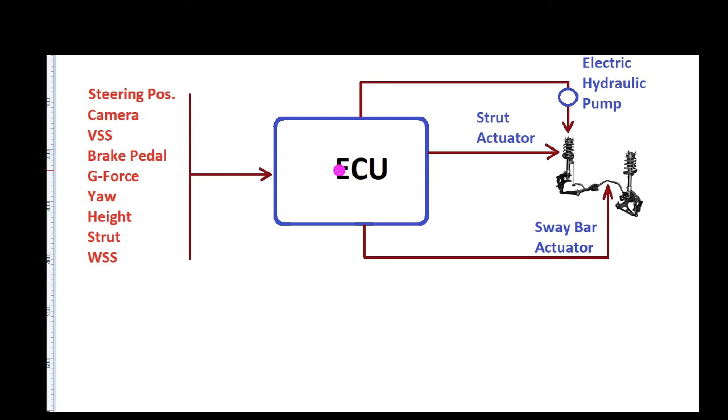We use these sensors. The ECU determines what to do and controls an actuator which is usually in the strut. The strut is then going to be changed as far as how stiff it is or its height. Sometimes they'll extend them and raise them up, lower them, and do different things with them.